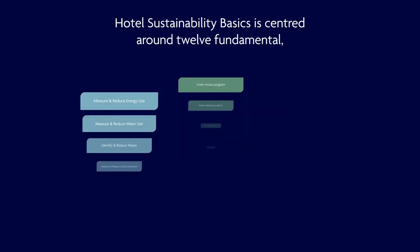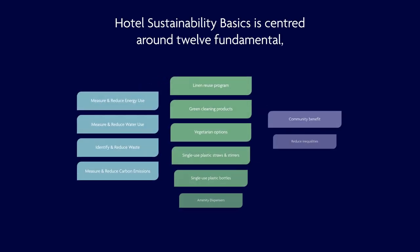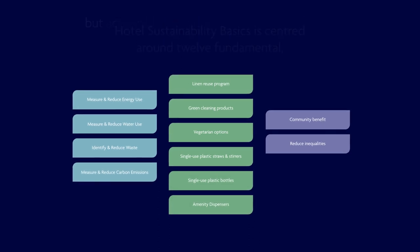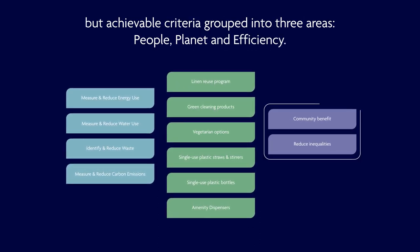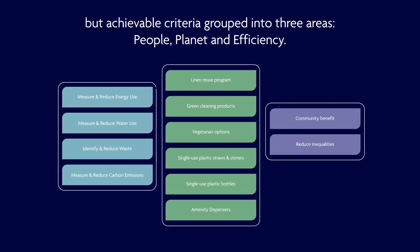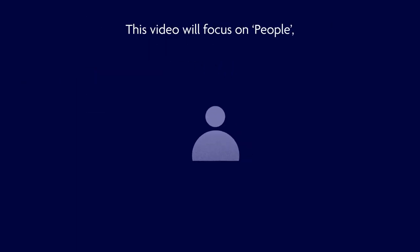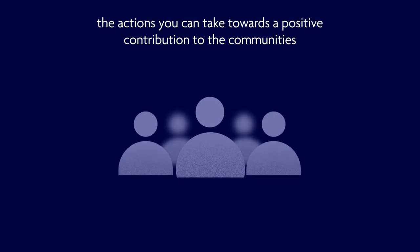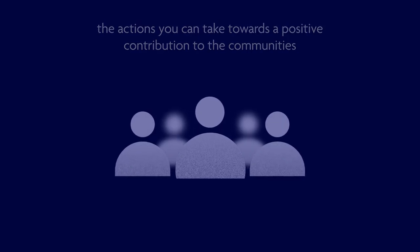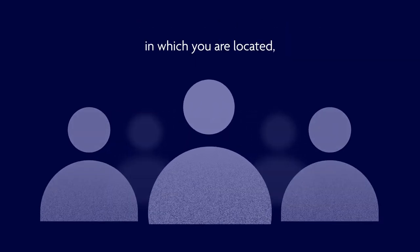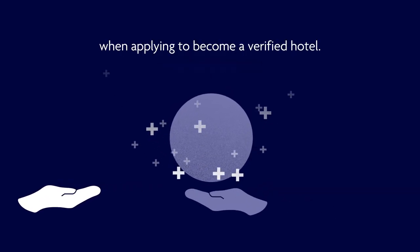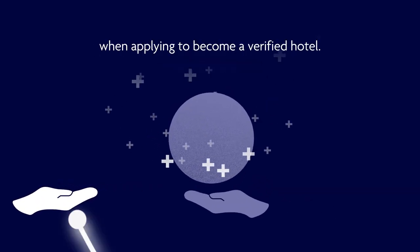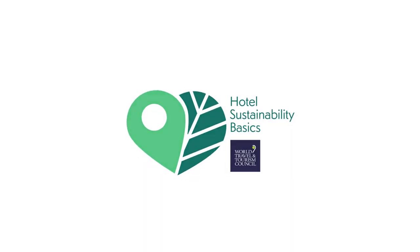Hotel Sustainability Basics is centered around 12 fundamental but achievable criteria grouped into three areas: people, planet, and efficiency. This video will focus on people — the actions you can take towards a positive contribution to the communities in which you are located, and examples of the evidence you will need to provide when applying to become a verified hotel.